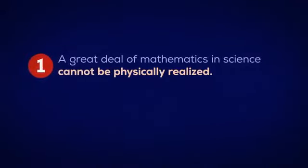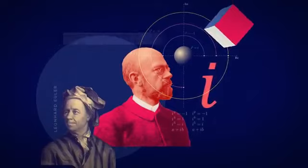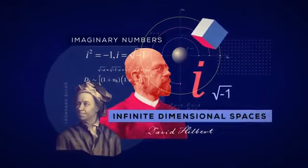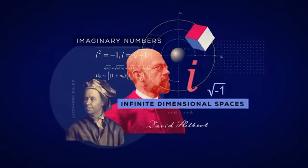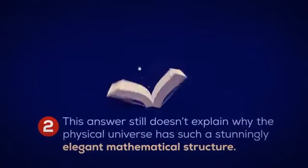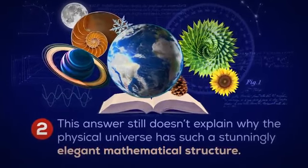First, a great deal of mathematics in science cannot be physically realized. For example, imaginary numbers and infinite dimensional spaces. Although these concepts are useful, physical reality cannot possibly have the structure they describe. And second, this answer still doesn't explain why the physical universe has such a stunningly elegant mathematical structure.